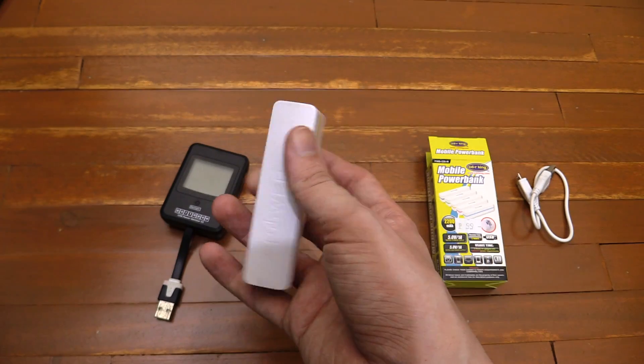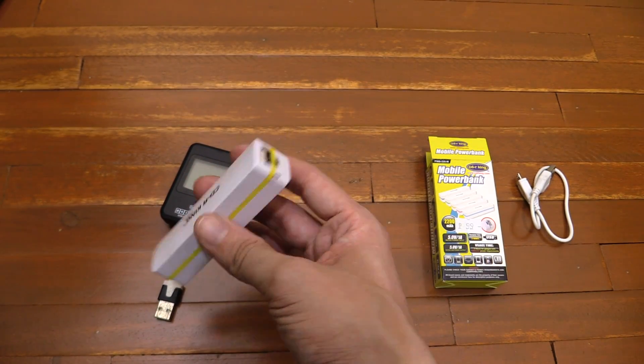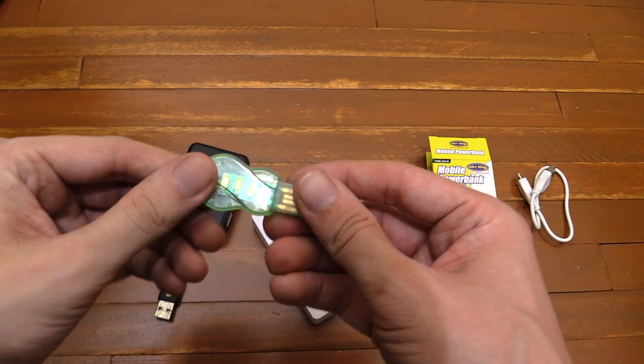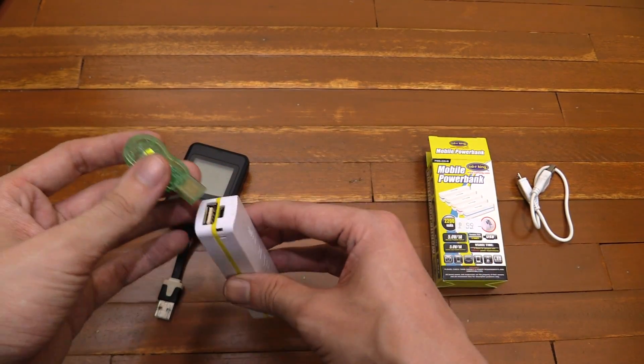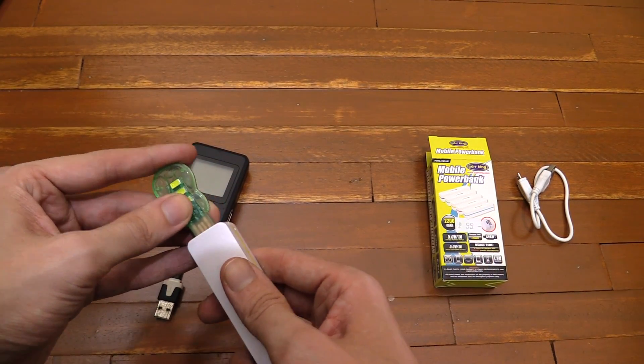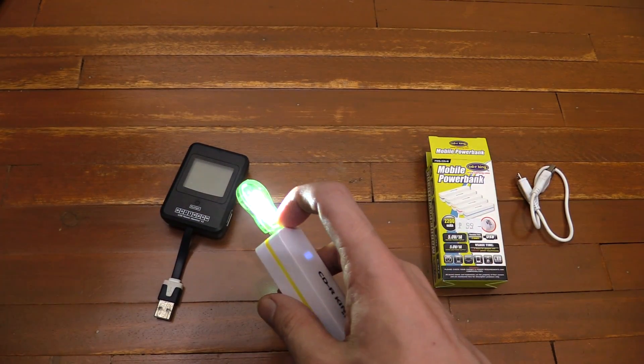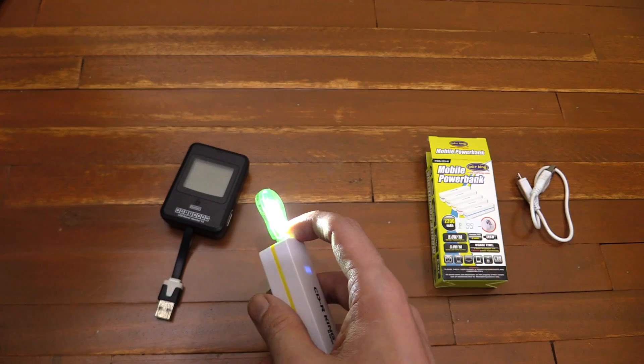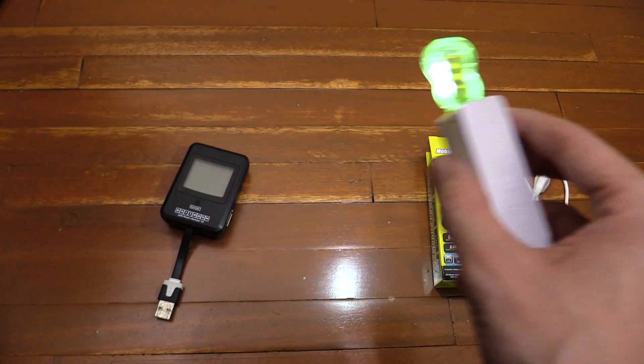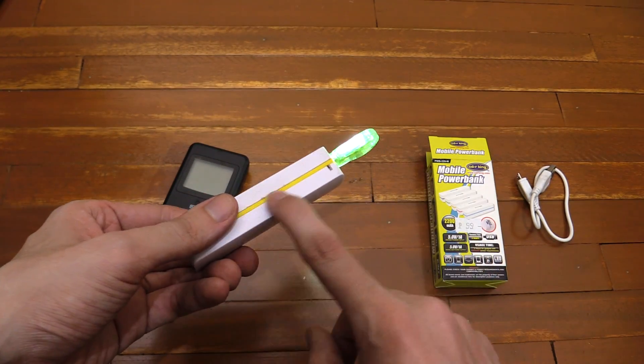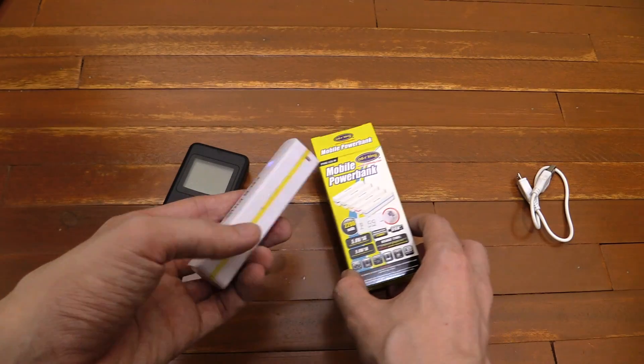These are great to have around in emergencies. Even if you don't use them for your cell phone, you can use them as like an emergency light. Because you can buy something like this from CDR King, and you just plug that in. And there you go. You've now got an emergency light. Now, this one is around, I think around half a watt. So it's not the brightest, but it's pretty bright. It will do you in a pinch, and it will run for a very long time on the battery in here.